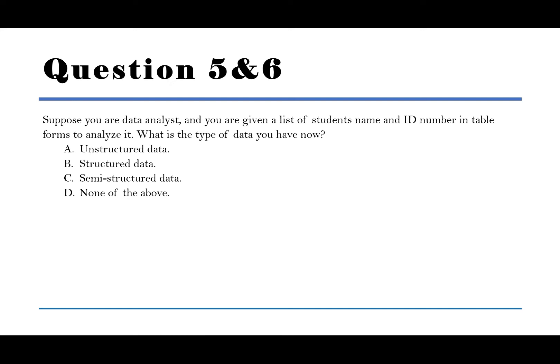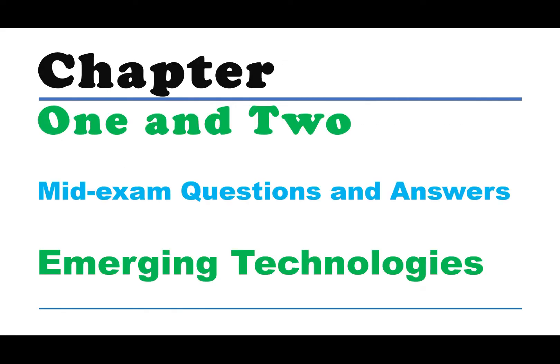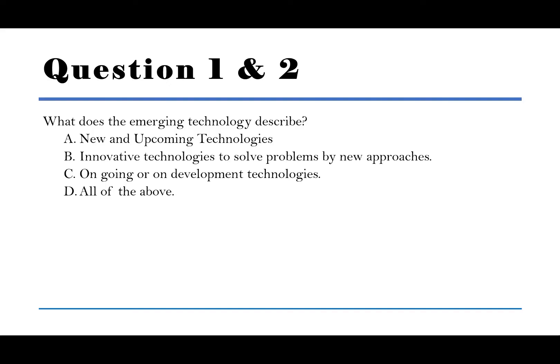Suppose you are a data analyst and you are given a list of student names and ID numbers in a table form to analyze it. Chapter 1 and 2 mid-examination questions and answers for emerging technologies. Question 1: What does the emerging technology describe? A. New and upcoming technologies. B. Innovative technologies to solve problems by new approaches. C. Ongoing or undevelopment technologies. D. All. The answer is D, all.